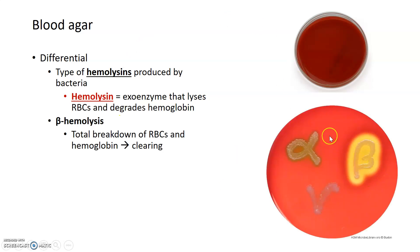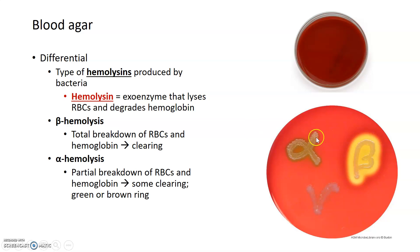There are several different types of hemolysis. Beta hemolysis is the total breakdown of red blood cells and the hemoglobin inside them, resulting in a clearing all around those red blood cells and a yellowish tint to the plate. Alpha hemolysis is a partial breakdown of the red blood cells and hemoglobin, which results in a little bit of clearing around the bacterial lawn as well as a green or brownish tint to the plate.